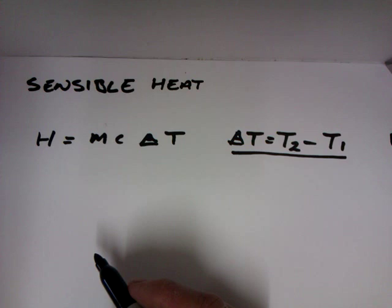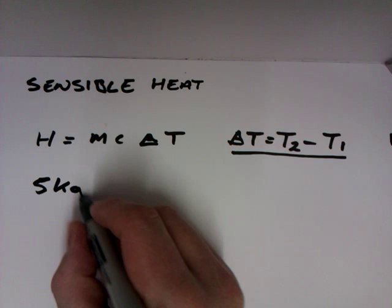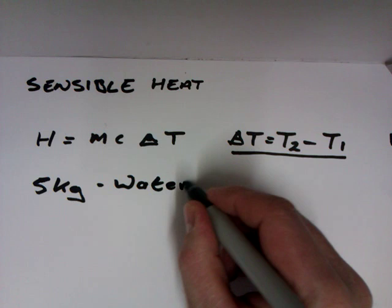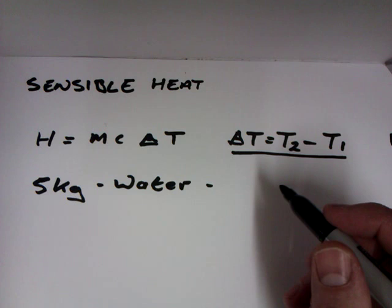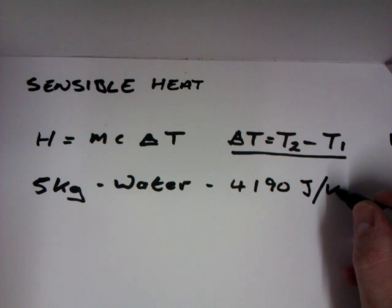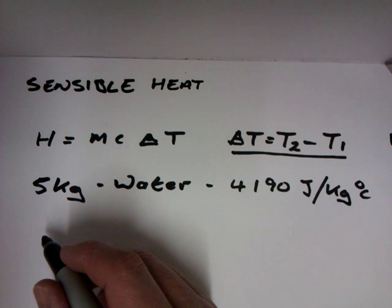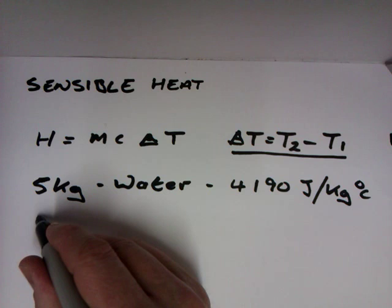So if we take for instance five kilograms of water which has a specific heat capacity of 4190 joules per kilogram degrees C, and we want to see what the heat requirement is to raise the temperature of that water from 5 degrees C to 75 degrees C.